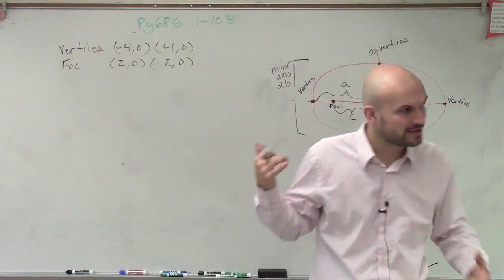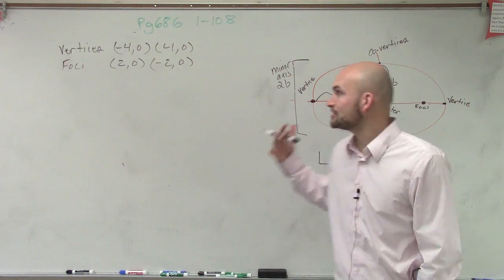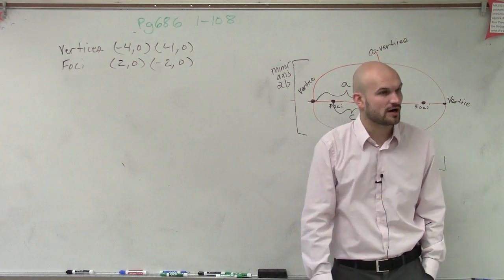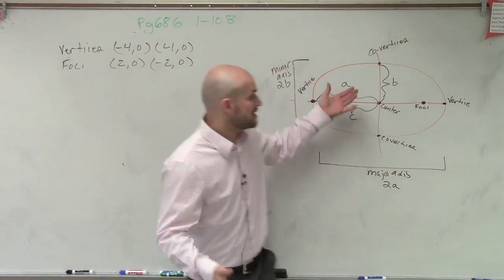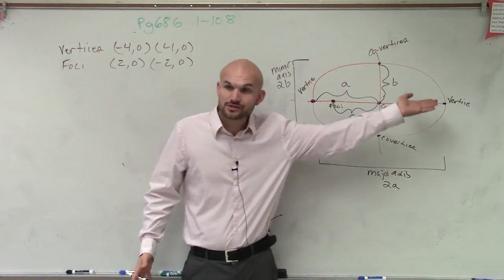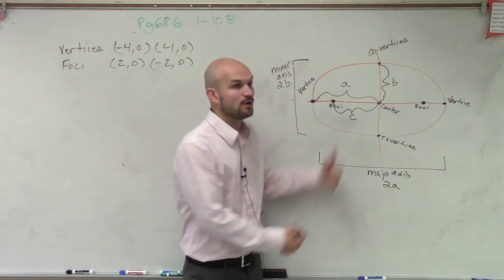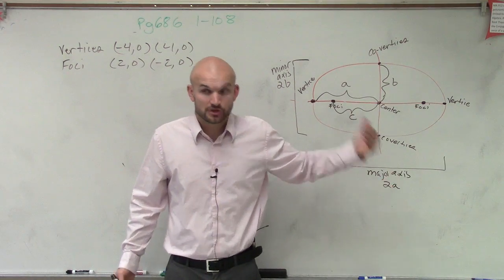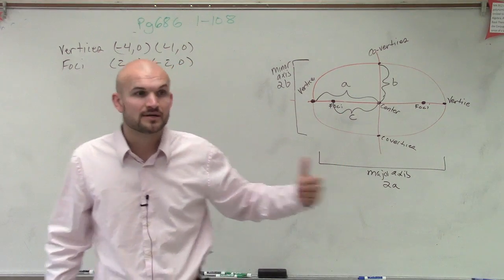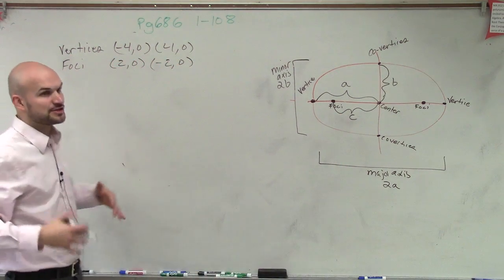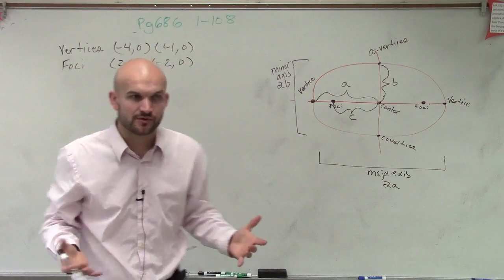Now, we're not going to be drawing a picture for this, but what I want to do is they're asking us to write the equation of our ellipse. We've talked about two different types of ellipses - an ellipse with a horizontal major axis and one with a vertical major axis. So there's two different types of ellipses with two different formulas. What we need to do is plot this information to determine which formula we need to use.